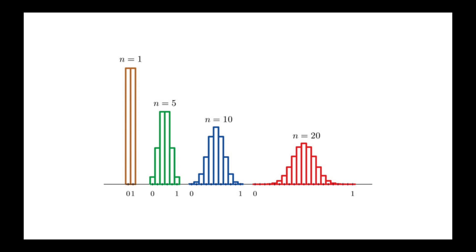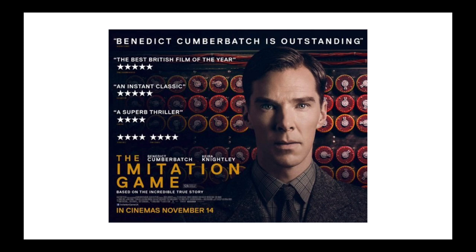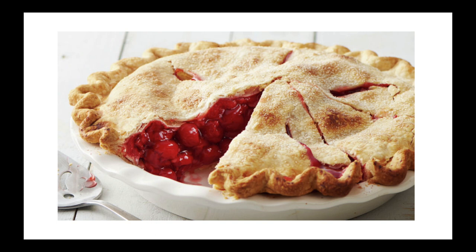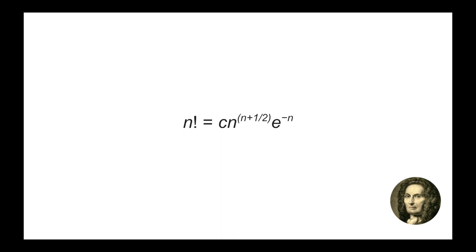Alan Turing also kind of figured out the central limit theorem or did the proof — unfortunately a Scandinavian mathematician called Lindenburg finished it before him. Coming back to pi: Abraham is busy flipping coins and he notices that n factorial is equal to a certain expression.